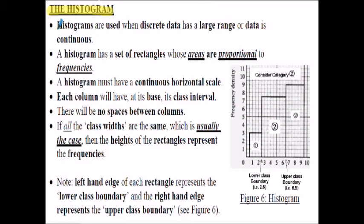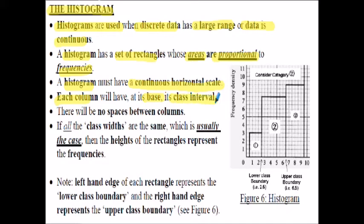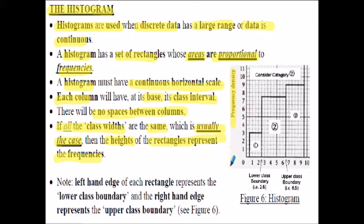The histogram - histograms are used when discrete data has a large range or the data is continuous. A histogram has a set of rectangles whose areas - and that's the key thing - are proportional to the frequencies, not the heights, but the areas. A histogram must be continuous on a horizontal scale. Each column will have its base and its class interval, and there will be no spaces between the columns because we're looking at continuous data. If all the class widths are the same, the heights of the rectangles represent the frequency. If they're not the same, on the vertical axis we plot frequency density, not frequency.